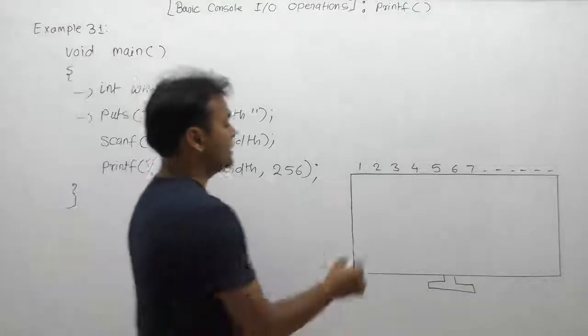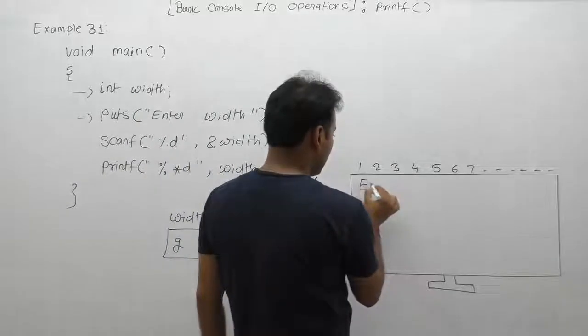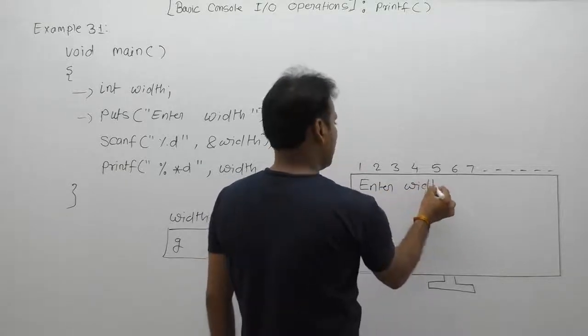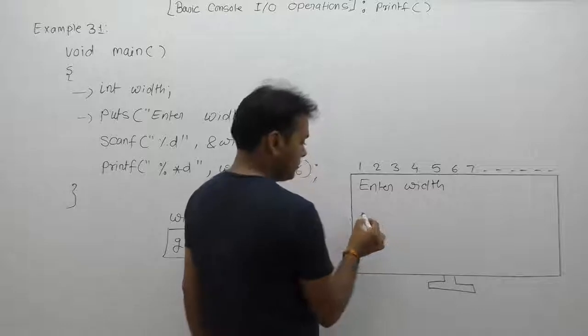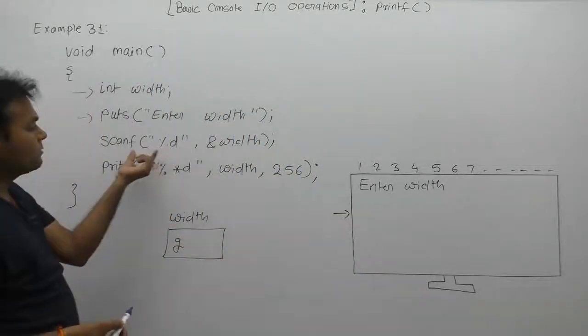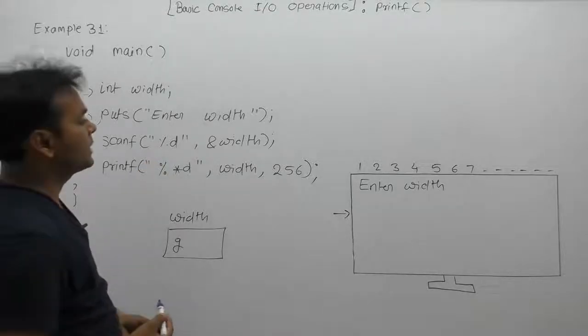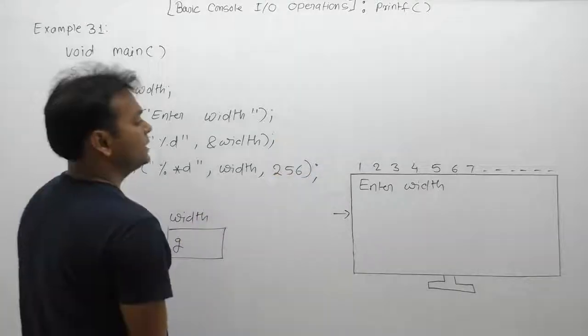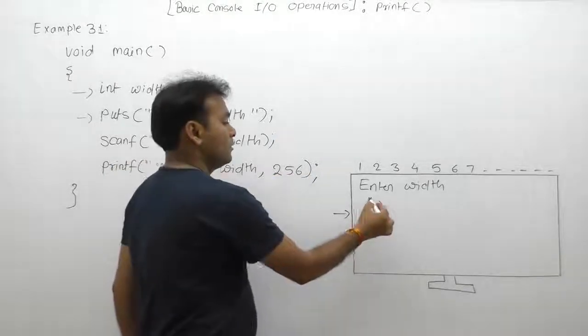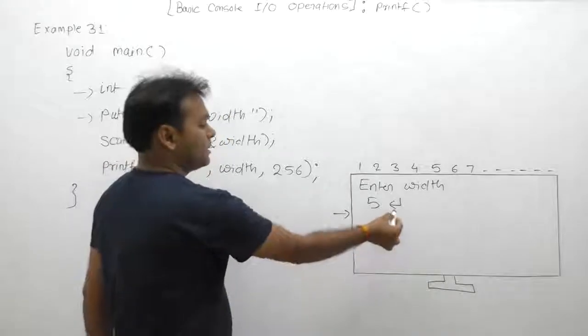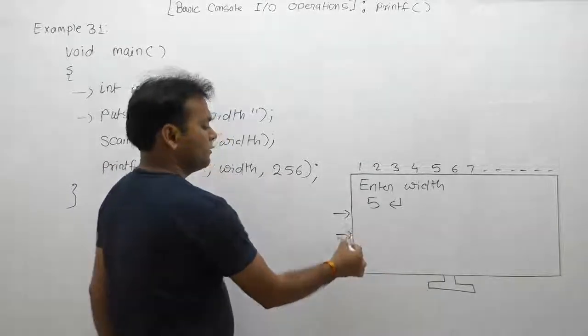After displaying the message it will change the line automatically. Enter. Next one: scanf function. As we are supplying width value as 5 using the keyboard, we are entering width value as 5. Then after pressing enter key, the cursor will be available on the next line.